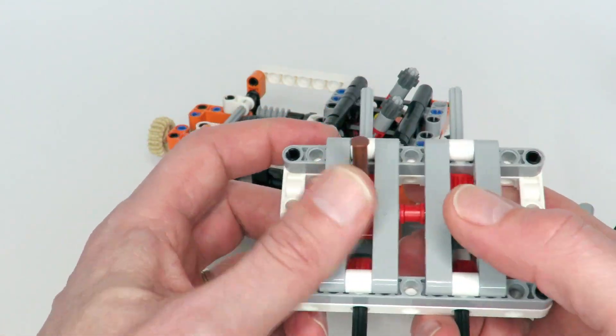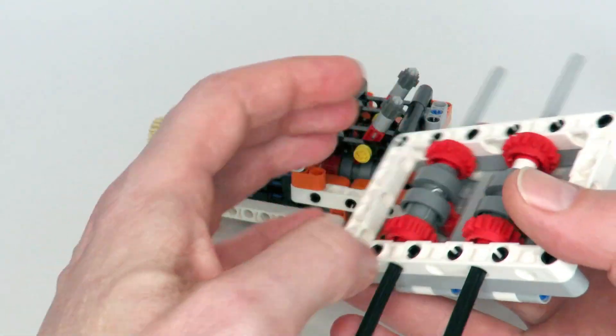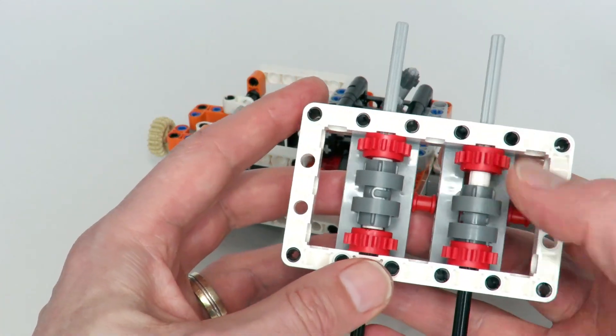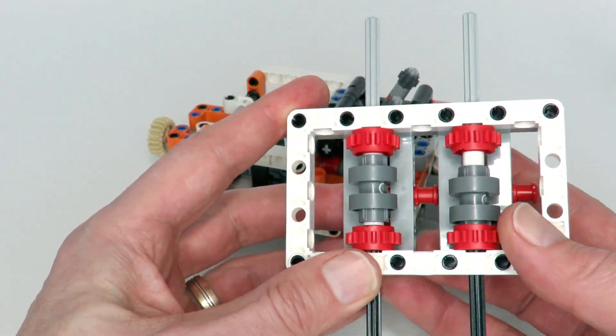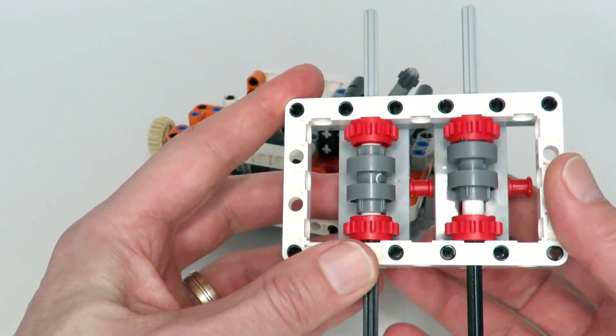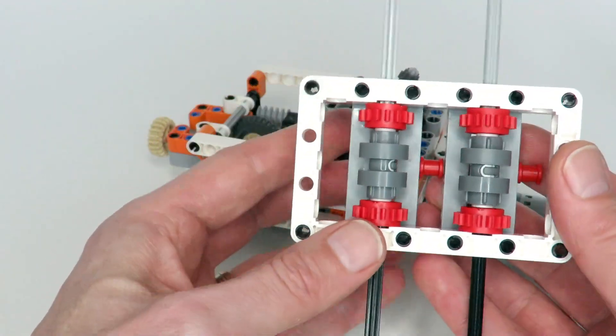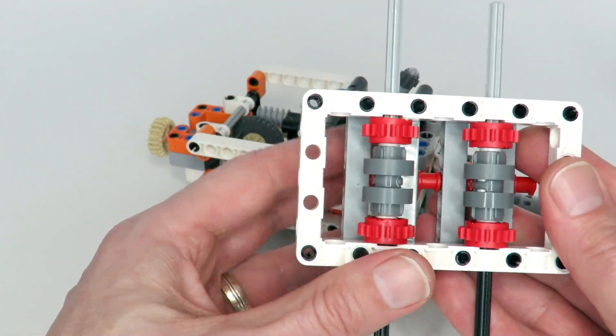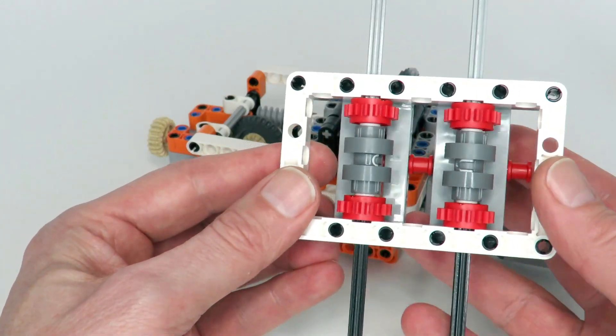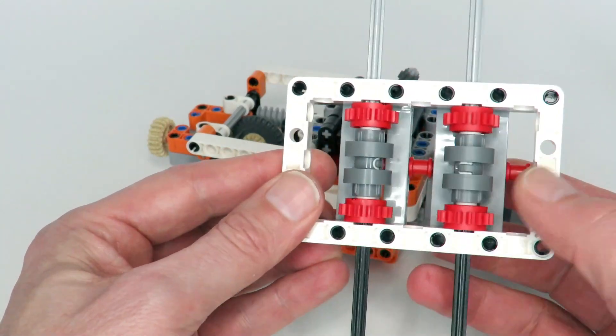You'd have two levers like this, and underneath you have your selectors, and each selector can select one of two different speeds—speed one and speed two—and then there's a sort of a neutral position in between. Same with this lever, so we're able to select four different combinations.